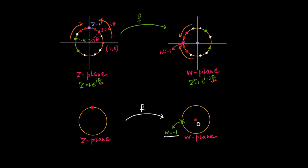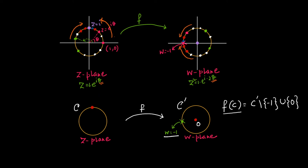So under the function f, the image of this yellow circle in the z-plane will be this yellow circle in the w-plane, excluding the point w = −1. If I name the original circle C and its image C prime, then f(C) = C′ minus {−1} union {0}. Can you draw this image continuously, without lifting your pen from the paper? The answer is no.